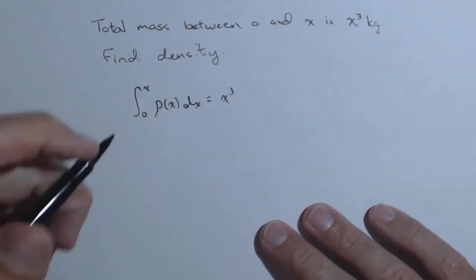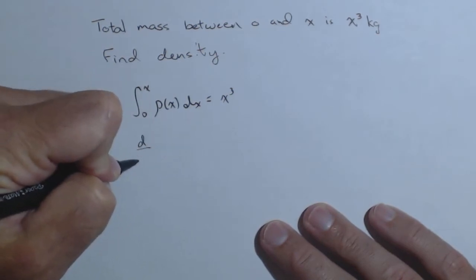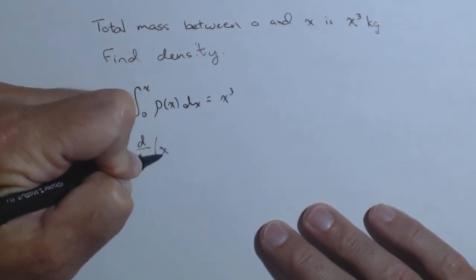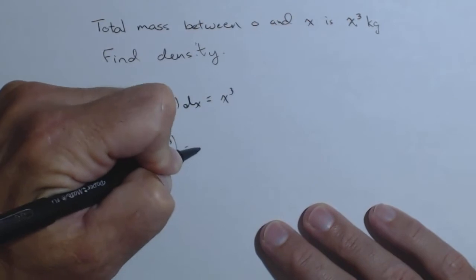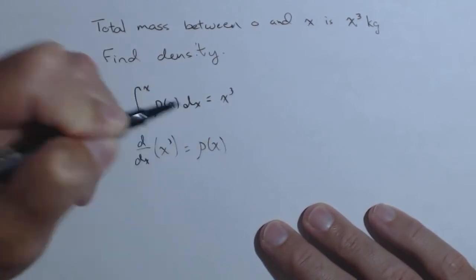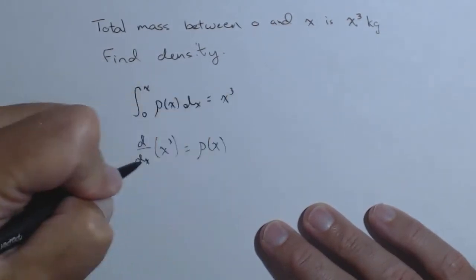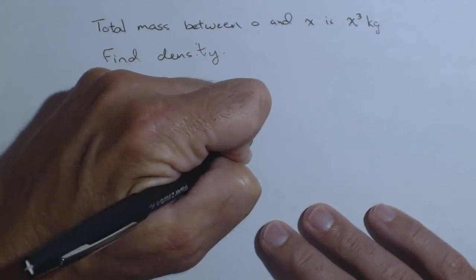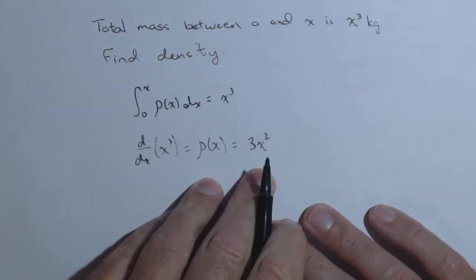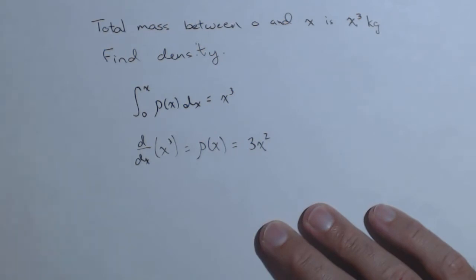What we know from the fundamental theorem of calculus is the derivative with respect to x of x cubed equals ρ(x). That means ρ(x) equals 3x squared. So there is our density as a function of x.